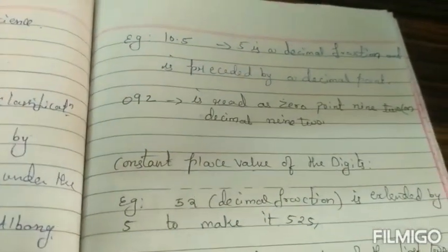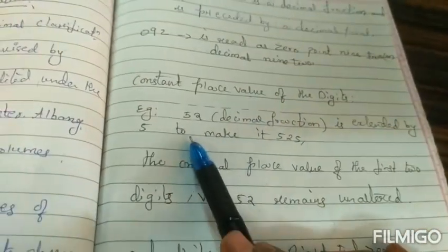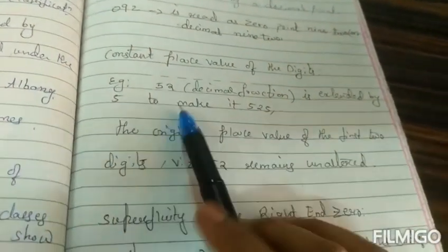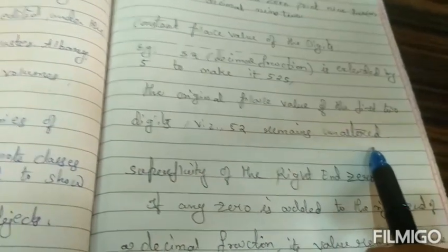For example, we can take 52. 52 is a decimal fraction and it is extended by 5 to make it 525. The original place value of these digits will not change, it will remain unaltered.